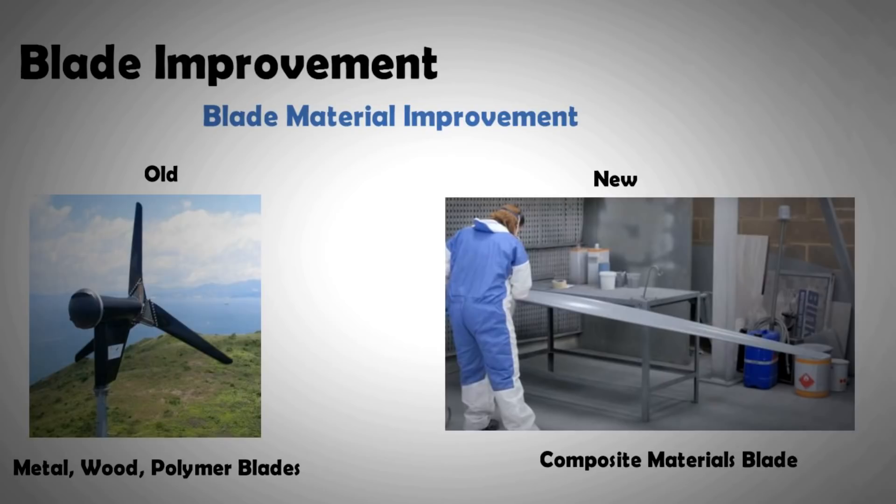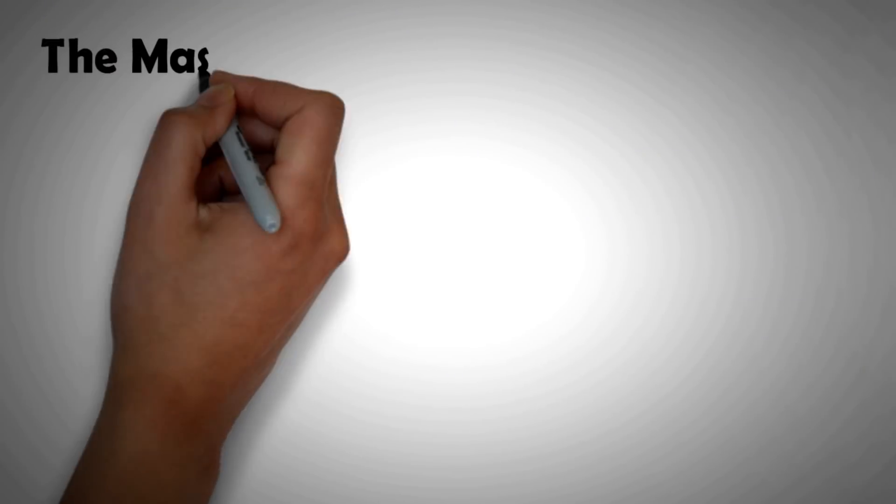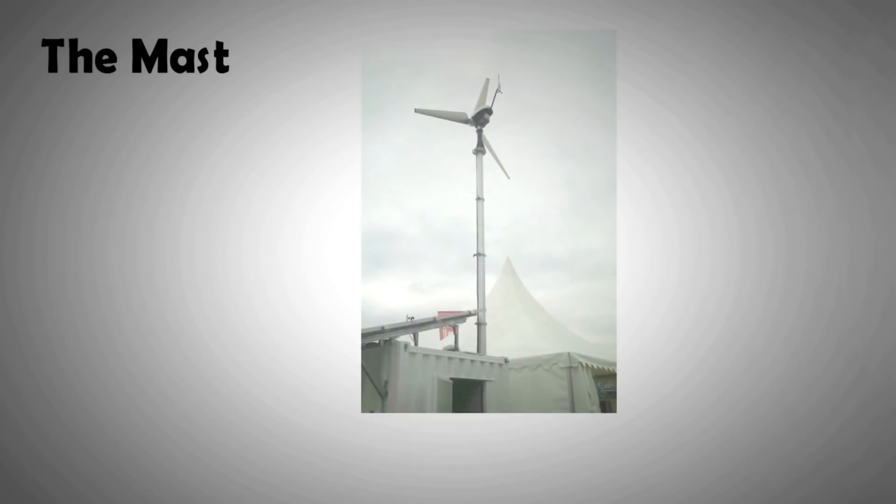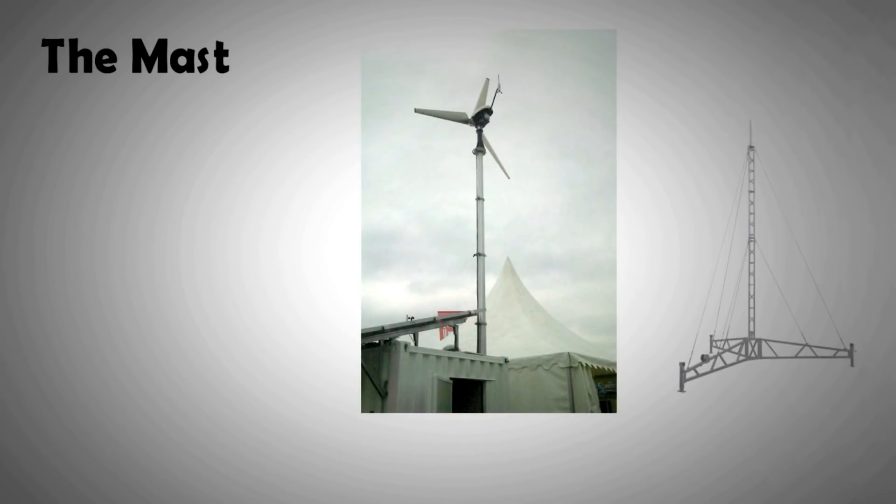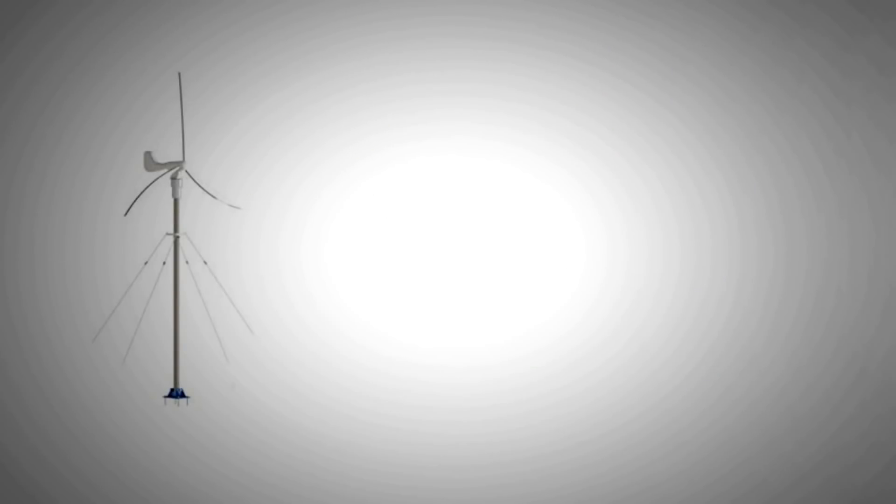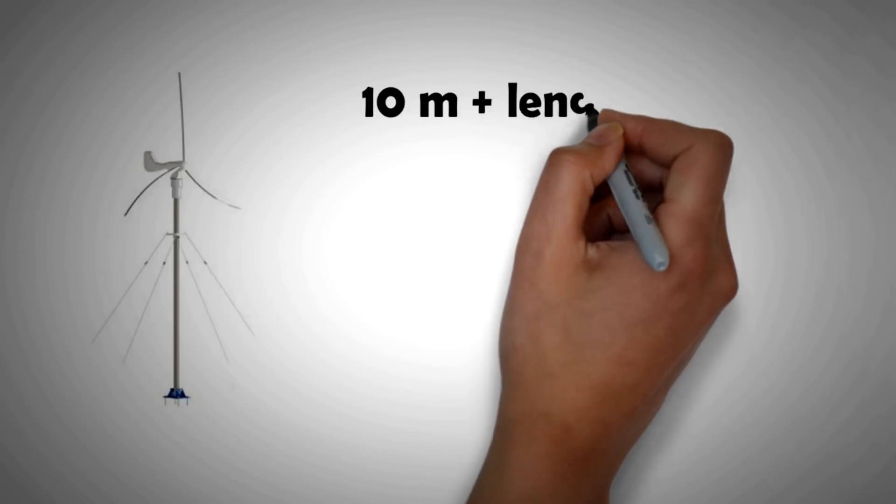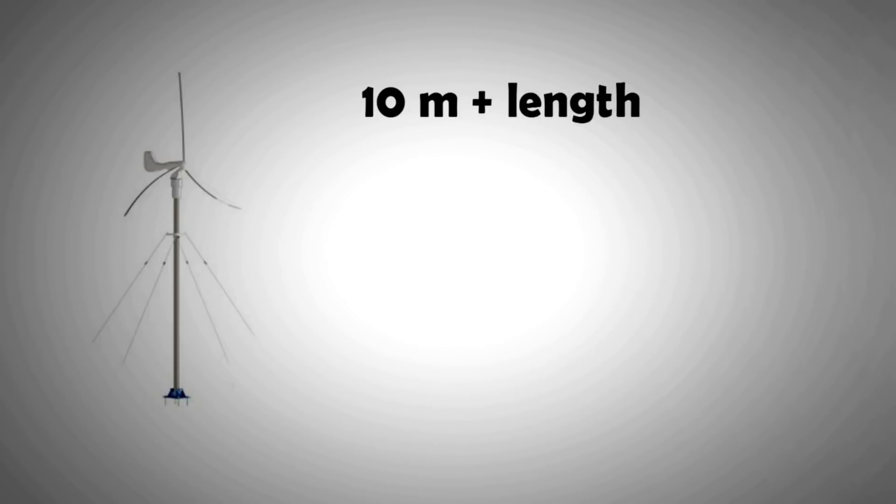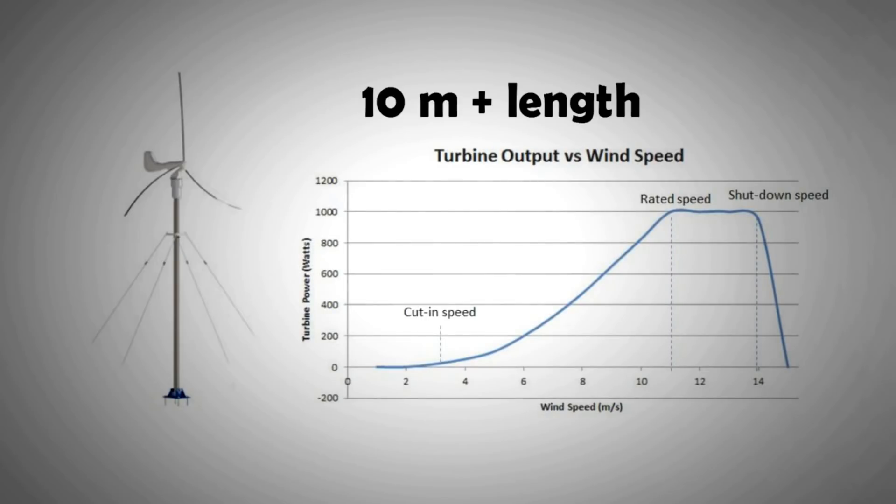The second important development for small turbines is the availability of telescopic masts and guide masts that now allow turbine nacelles to be mounted at heights of 10 meters or above. It's common knowledge that the further the distance from the ground, the higher is the wind speed. And there is a cubic relationship between power and wind speed, so the slightest increment in wind speed results in a huge improvement in power.